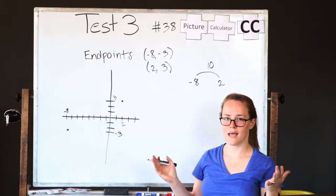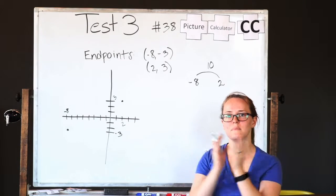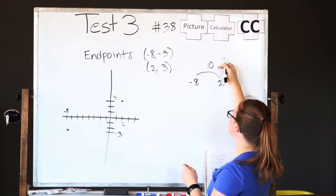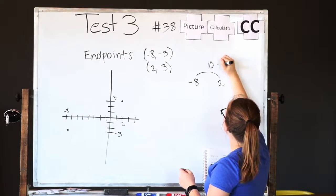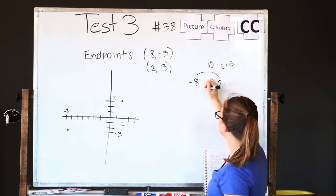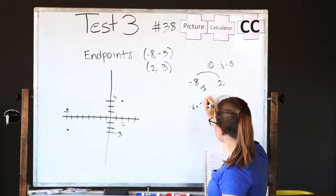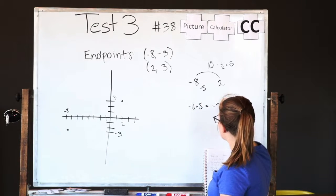It's 10 units long in x's. That's the distance between x1 and x2. And we want the midpoint. So half of 10 is 5. And so all we're really going to do here is add 5 to negative 8. So negative 8 plus 5 equals negative 3.